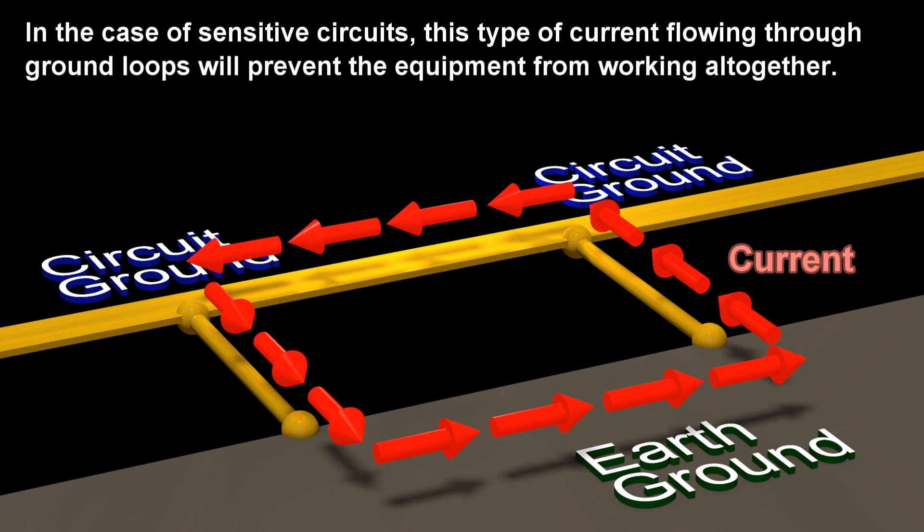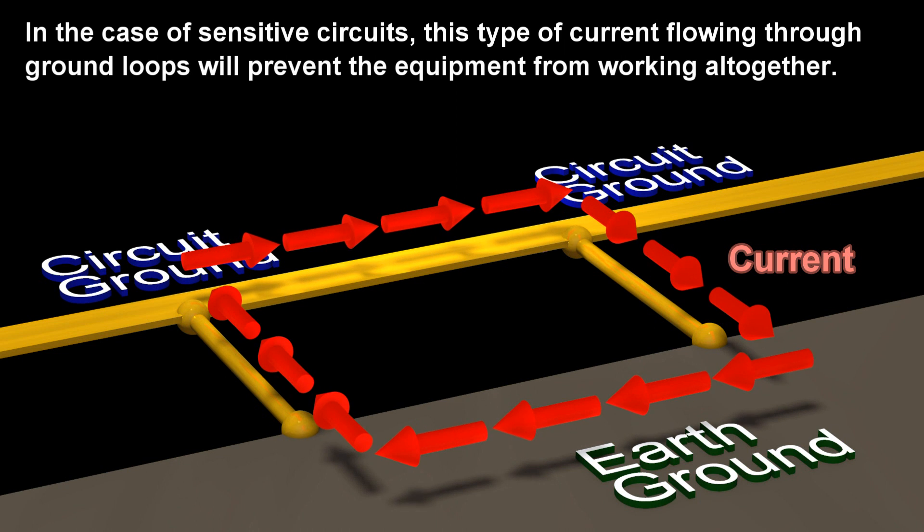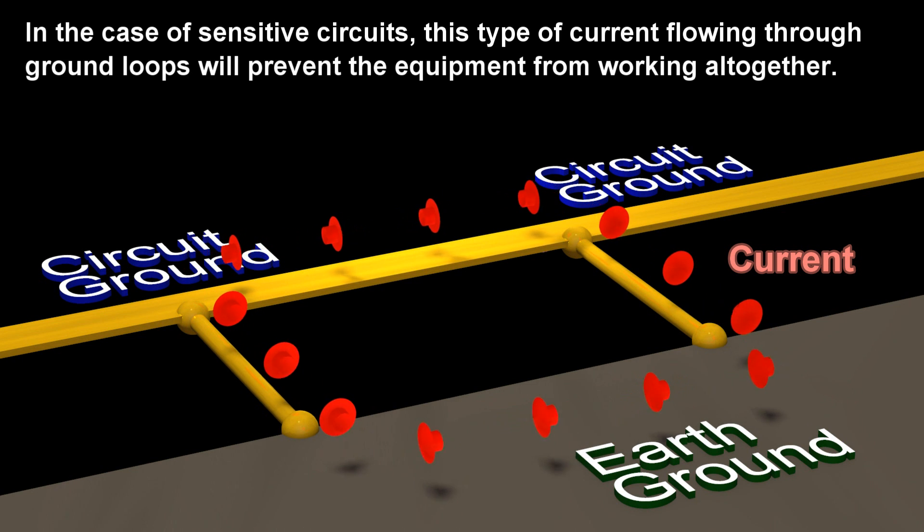In the case of sensitive circuits, this type of current flowing through ground loops will prevent the equipment from working altogether.